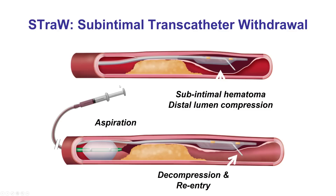Sometimes dissection and reentry can cause a sub-intimal hematoma, and the problem is that it compresses the distal true lumen, making it very hard to reenter. One solution is the STRAW technique — subintimal transcatheter withdrawal — in which a balloon is used to aspirate and decompress the hematoma, re-expanding the vessel and making a better target for reentry.